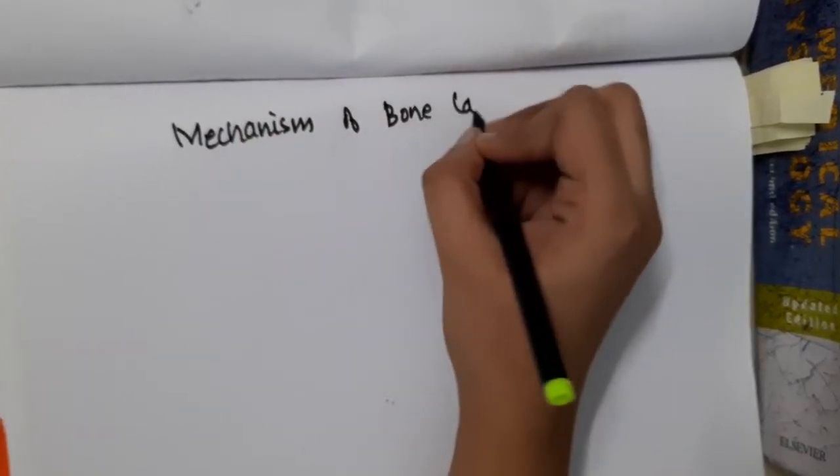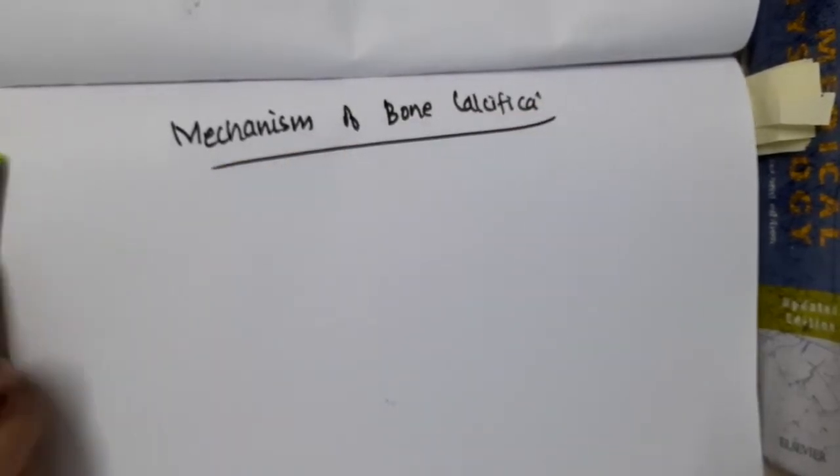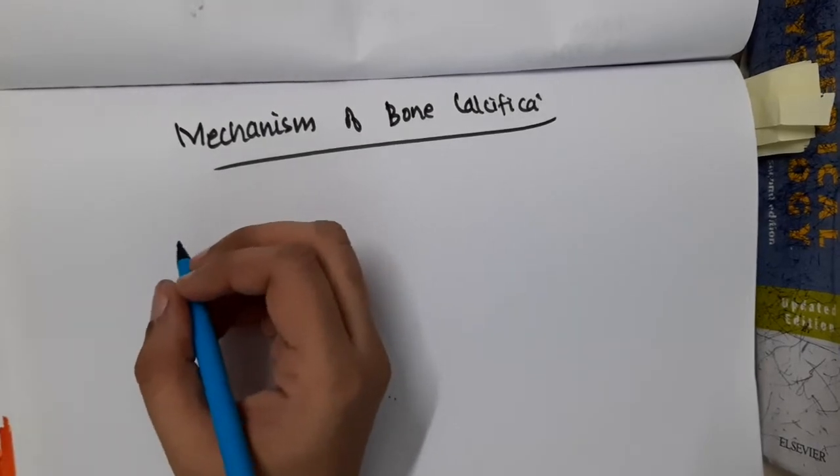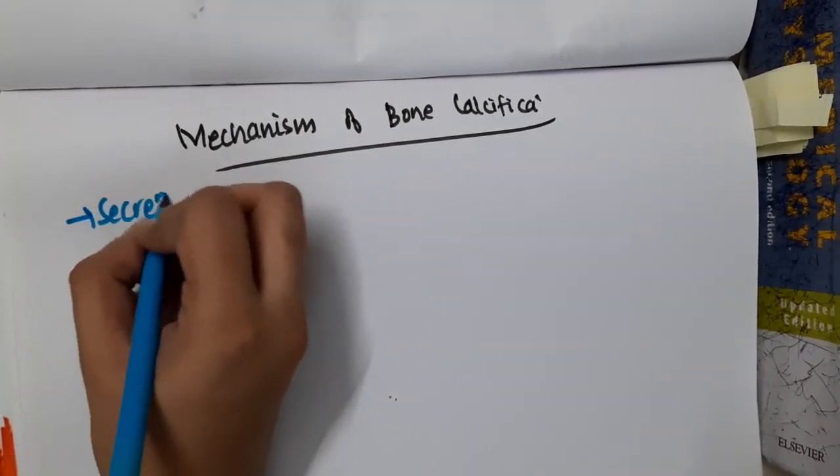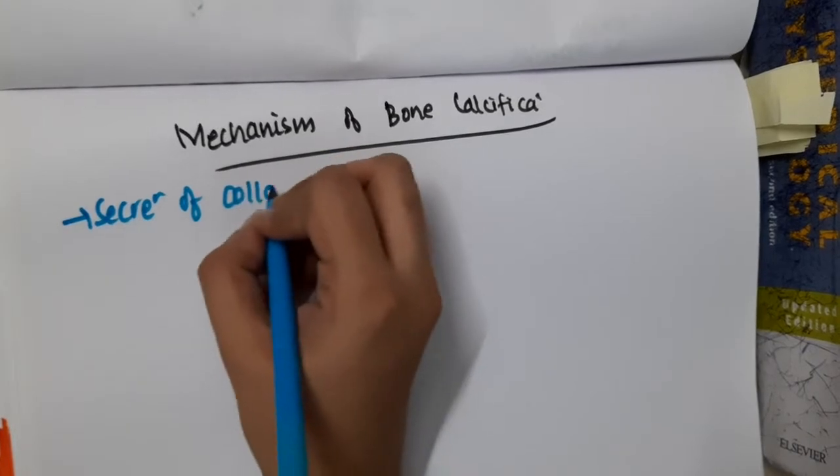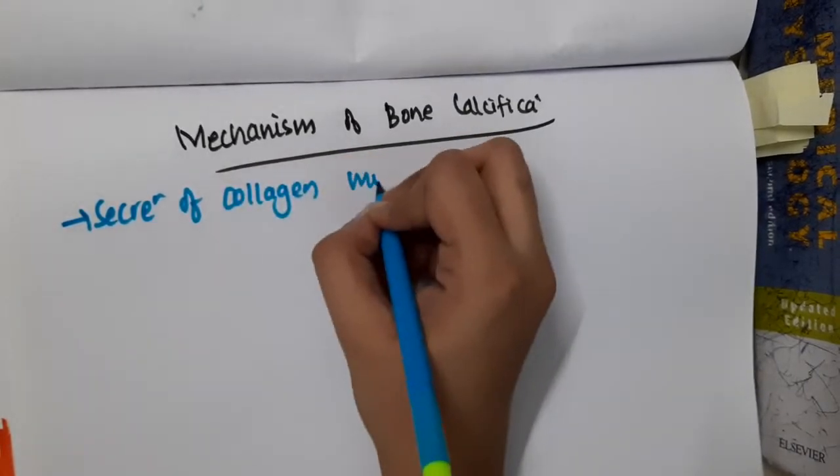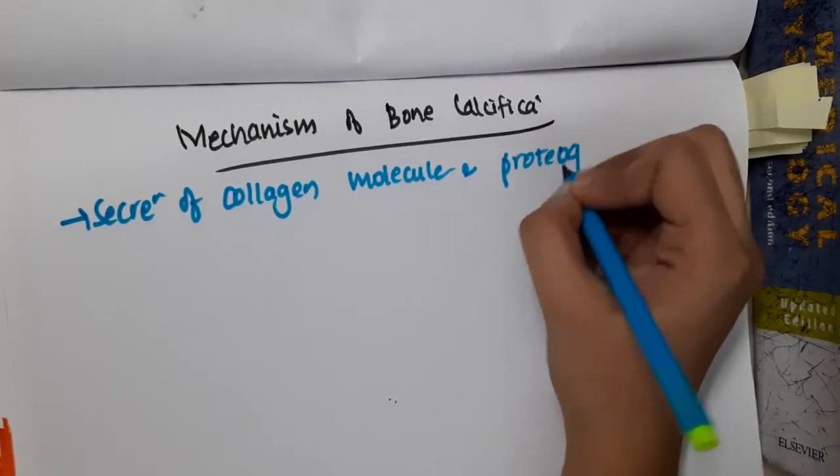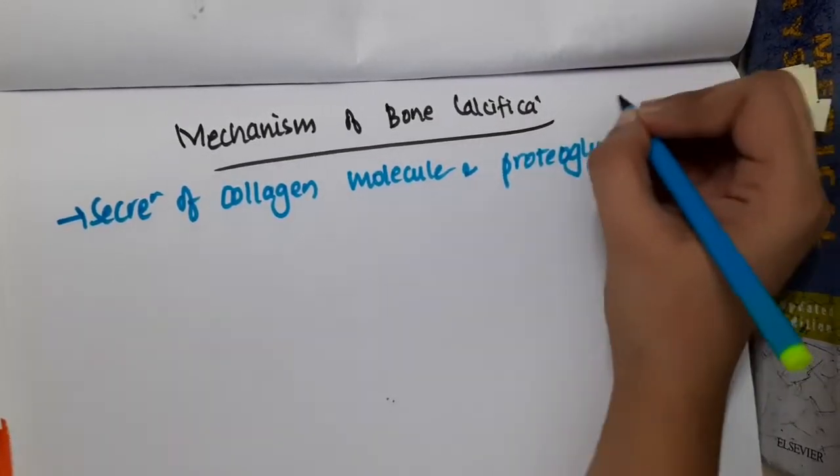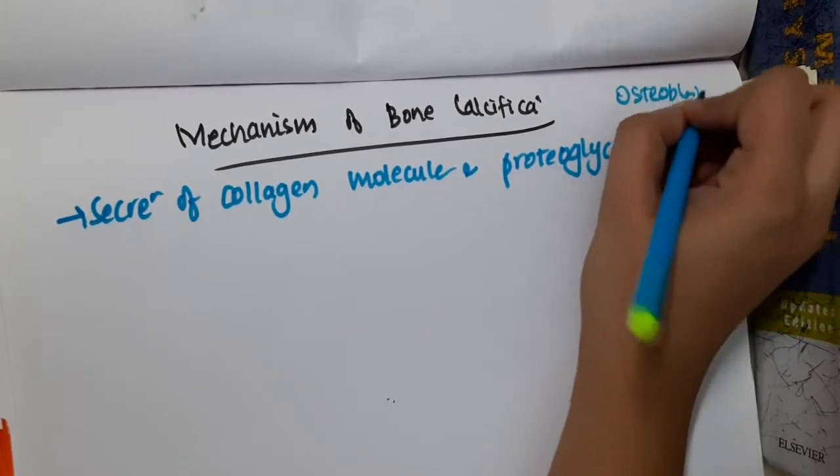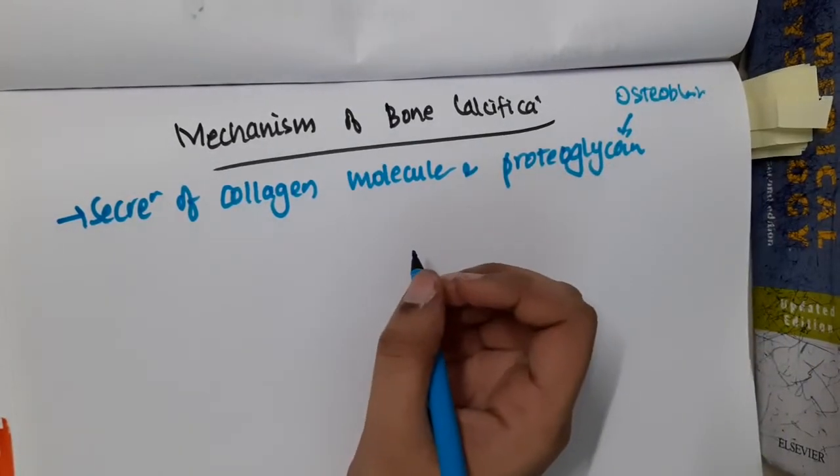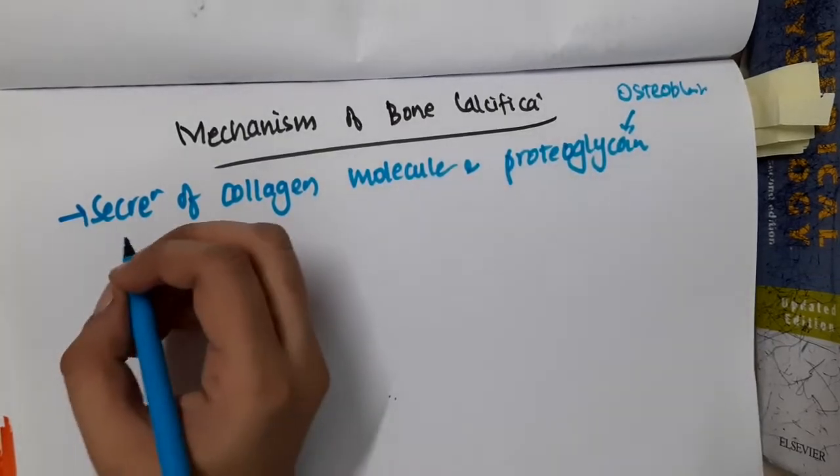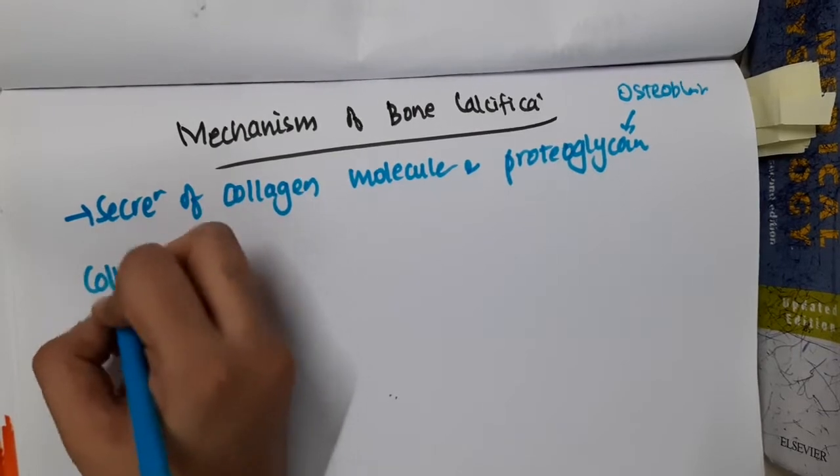In the mechanism of bone calcification, the first initial stage in bone production is secretion of collagen molecules and proteoglycans by osteoblasts. Osteoblasts produce collagen molecules and proteoglycan molecules. Then the collagen monomers polymerize.